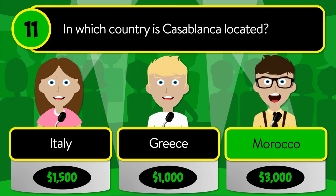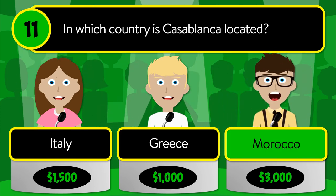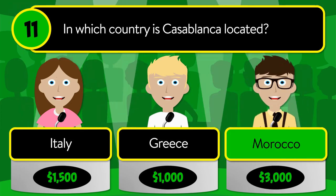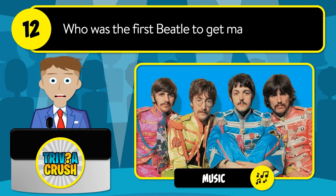Question number eleven: in which country is Casablanca located? Is it Italy, Greece, or Morocco? The correct answer is Morocco.